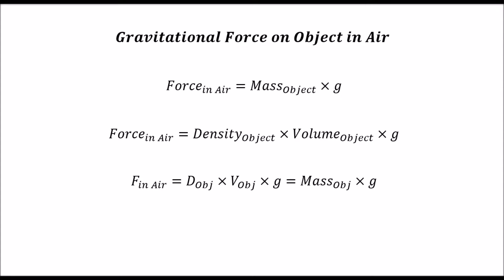First, we weighed the object in air. The force on the object in air — disregarding any buoyancy due to air — is the mass of the object times the gravitational acceleration g. The force in air equals the density times the volume of the object times g, which is also equal to the mass times g.